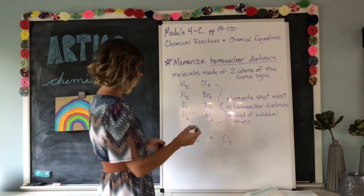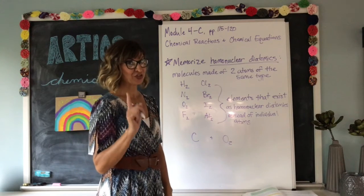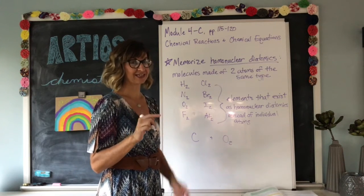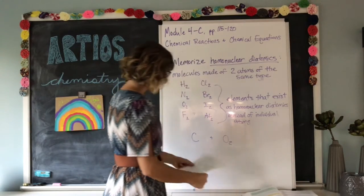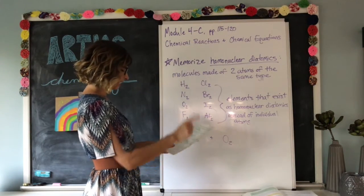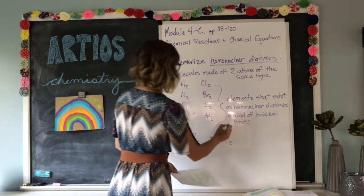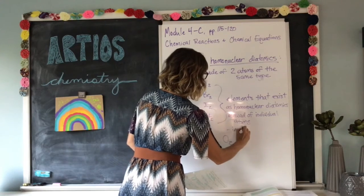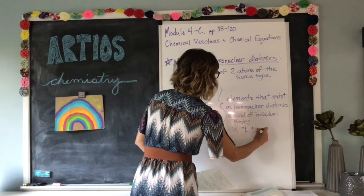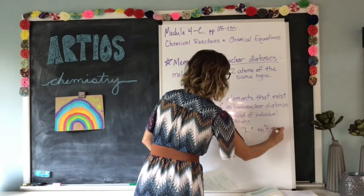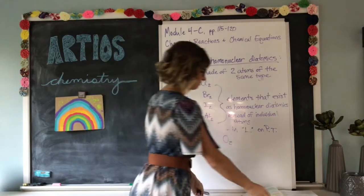Those are the homonuclear diatomics. You have to memorize which ones they are, but you're going to love this — it's going to make you fall in love with the periodic table just a little bit more. They are actually found in an L shape on the periodic table.